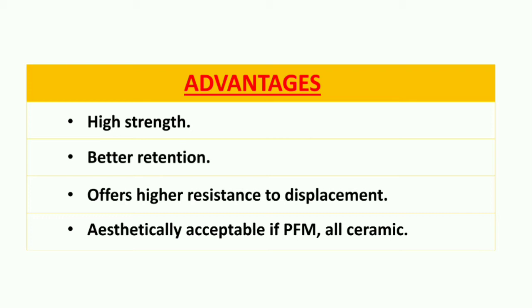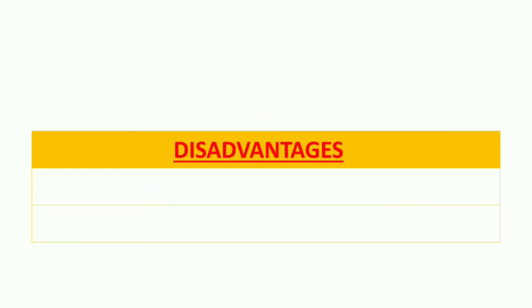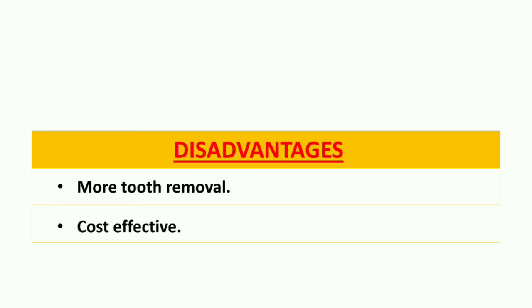If the prosthesis is made of all-ceramic or PFM — that is, porcelain fused to metal — it is also aesthetically acceptable. The disadvantages of full coverage veneer retainers: first is more tooth removal, and the second is cost. Since we cover all surfaces of the abutment tooth, we must prepare every surface, requiring more tooth removal. It is also costlier than the partial coverage retainer.